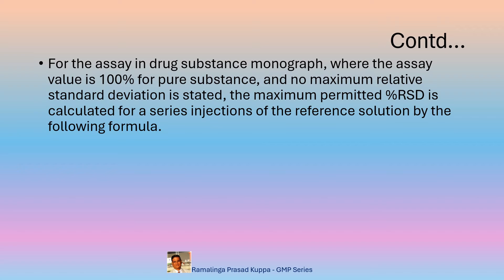For the assay in drug substance monograph, where the assay value is 100% for a pure substance and no maximum relative standard deviation is stated, the maximum permitted %RSD is calculated for a series of injections. The formula is: %RSD = K × B × √N ÷ T90% at N−1 degrees of freedom. There is a provision for a series of injections between 3 and 6, with %RSD calculated by this formula.